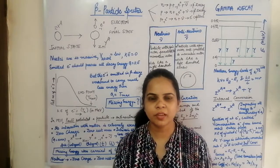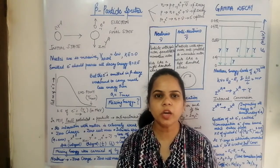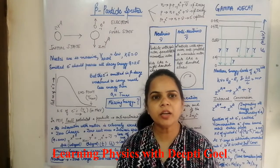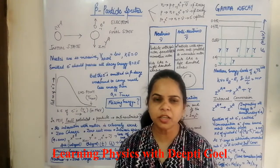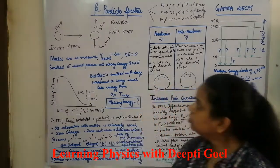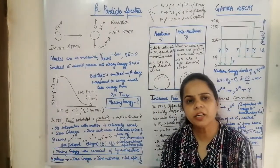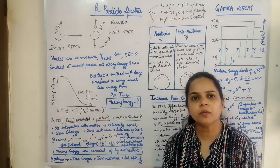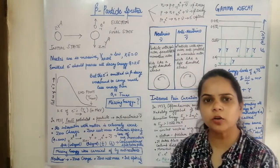Hello students. In this module we are going to discuss the beta particle spectra, gamma decay, and some other processes like internal pair creation and internal conversion. We had already discussed about the beta decays: electron emission, positron emission, and electron capture.